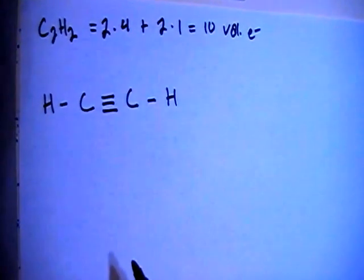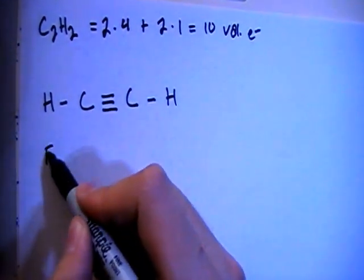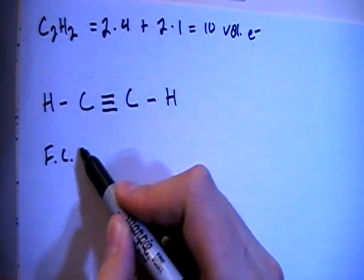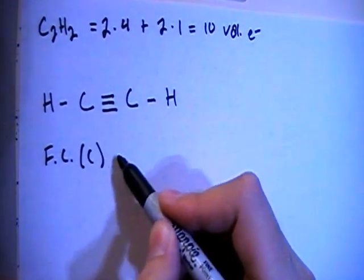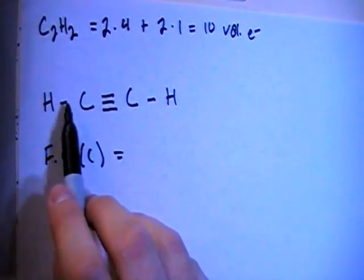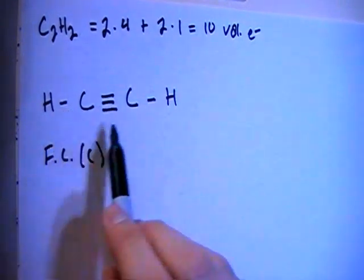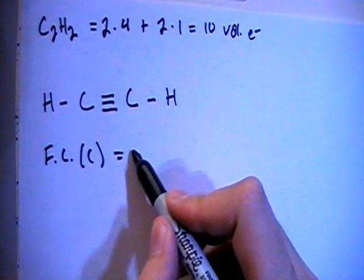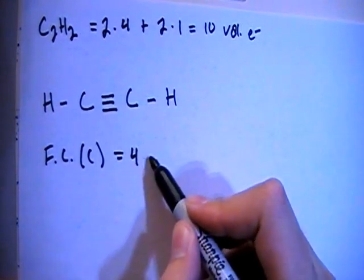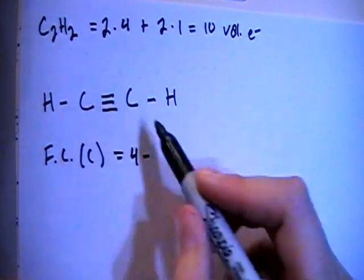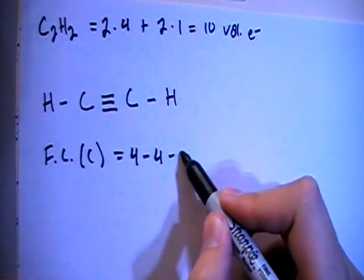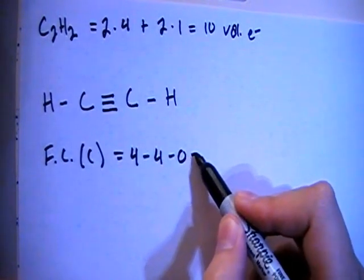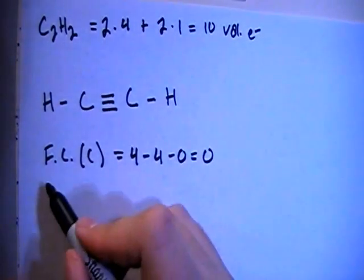So let's go ahead and check the formal charges. The formal charges on the carbons. And notice that each carbon has the same setup as a triple bond and a single bond. So the formal charges should be the same for each one. That's going to be four valence brought in minus one, two, three, four bonds minus zero non-bonding electrons for a total of a formal charge of zero.